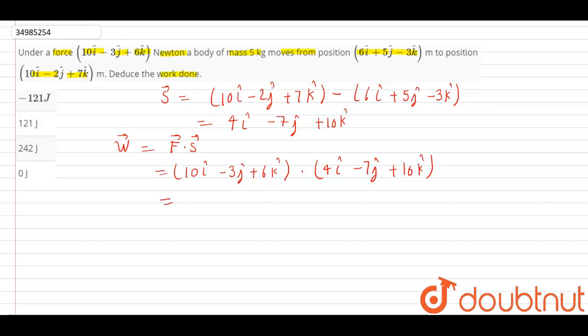which equals to 40 plus 21 plus 60 equals to 121 joules. These are the correct answers. Okay guys, thank you.